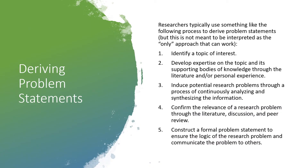So how do we derive our problem statements? Researchers typically use something like the following process. It's not meant to be interpreted as the only way it can work — it's just guidelines. Obviously, you start by identifying a topic of interest. Second, develop expertise in the topic and its supporting bodies of knowledge through the literature and/or personal experience. We have a topic, and we need to know something about it before we can decide what to do about it. Then, induce potential research problems through a process of continuously analyzing and synthesizing the information.